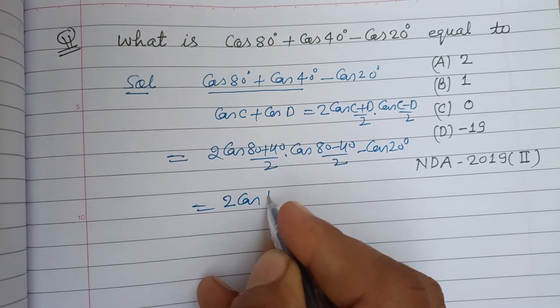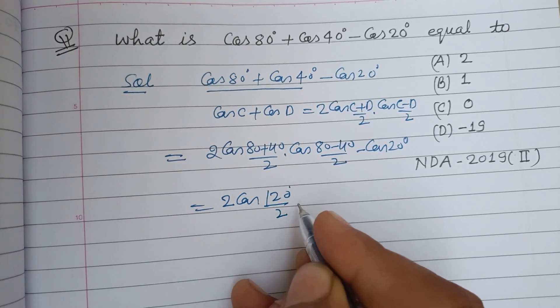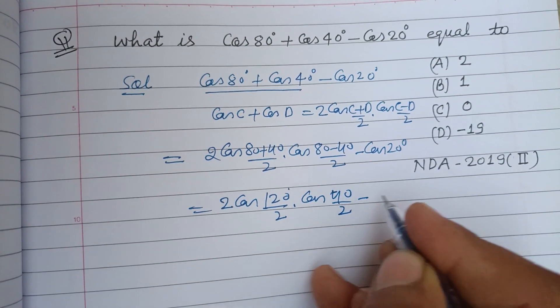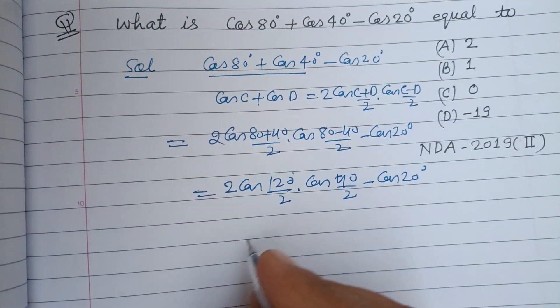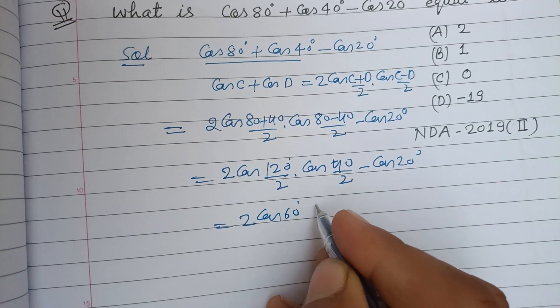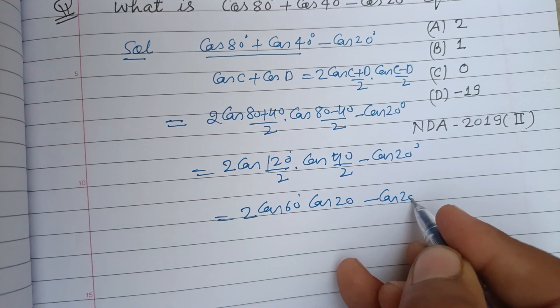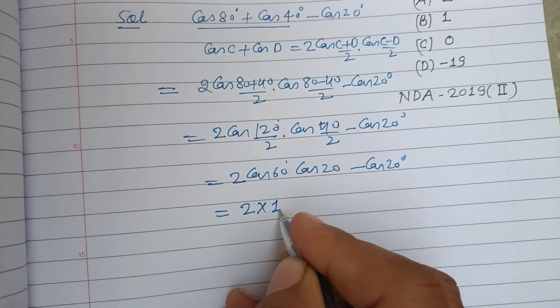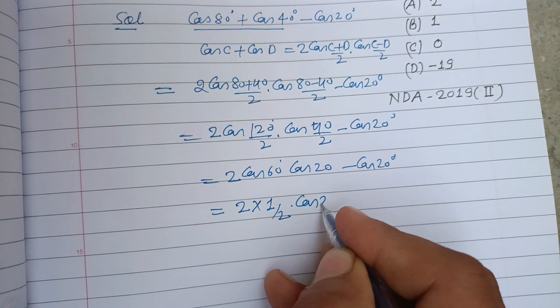Simplifying, this is 2 cos 60° into cos 20° minus cos 20°. And 2 cos 60° is 1/2, so we have (1/2) into cos 20° minus cos 20°.